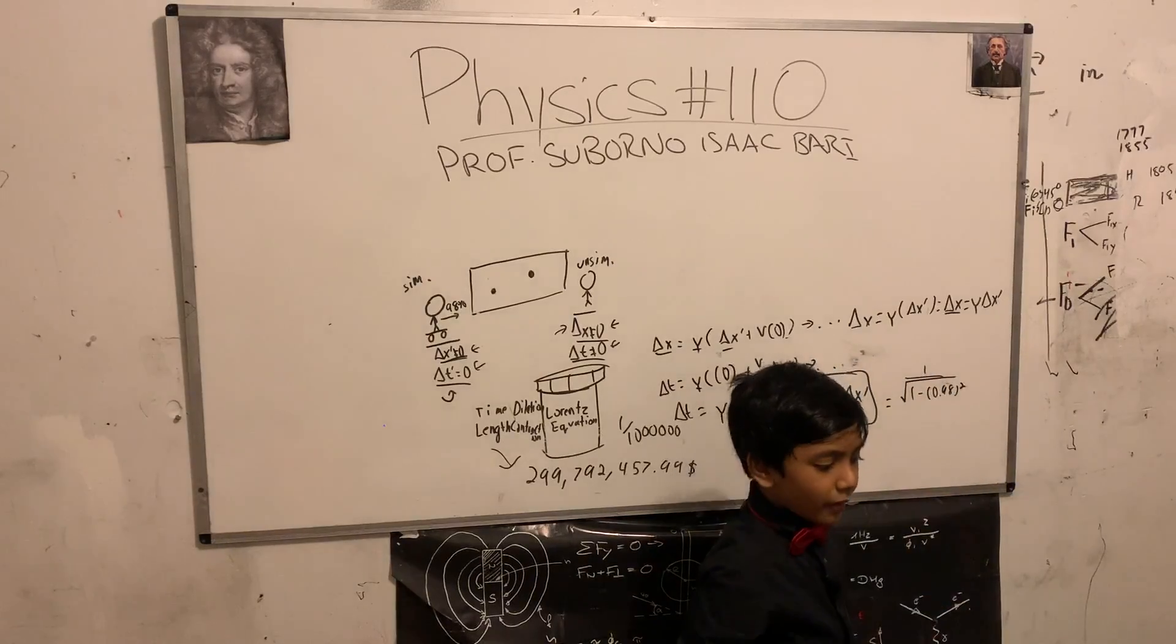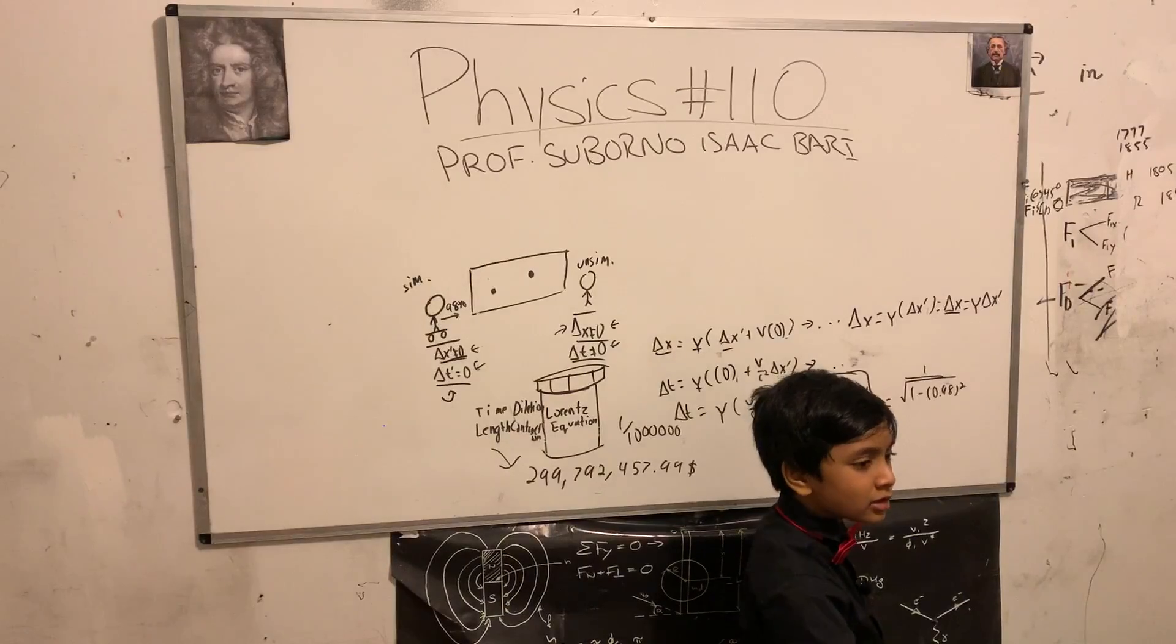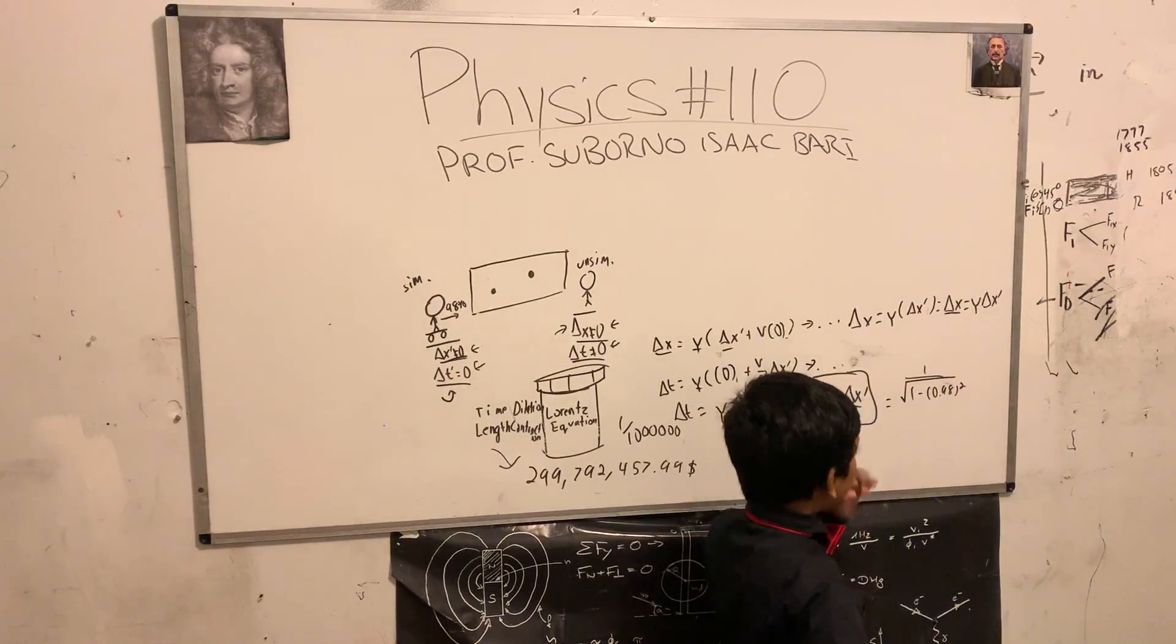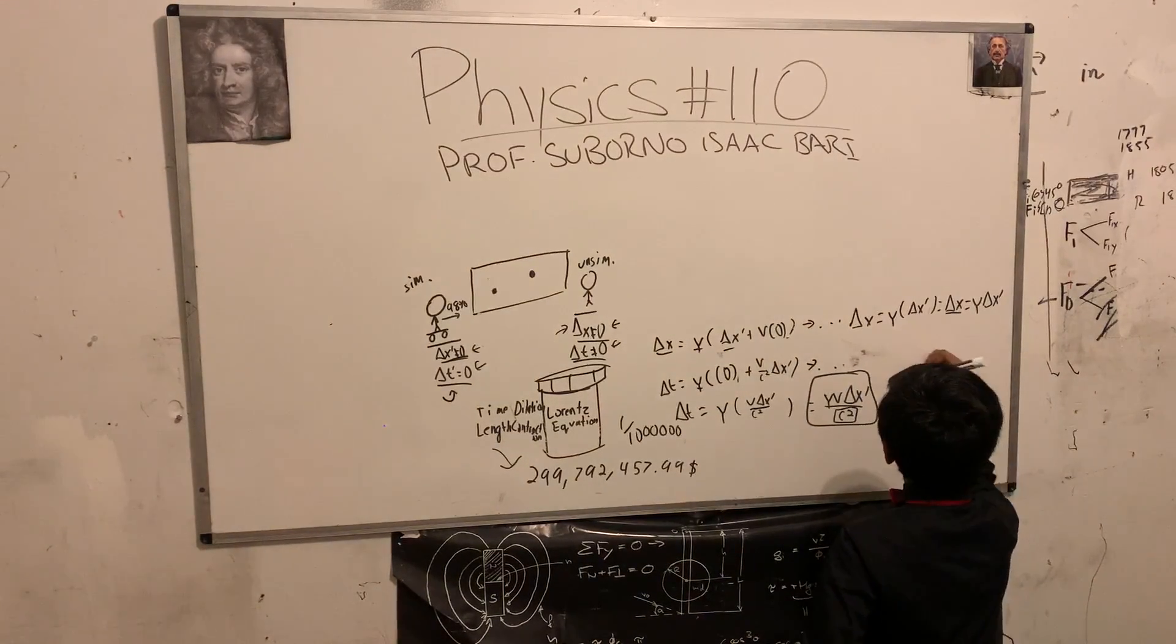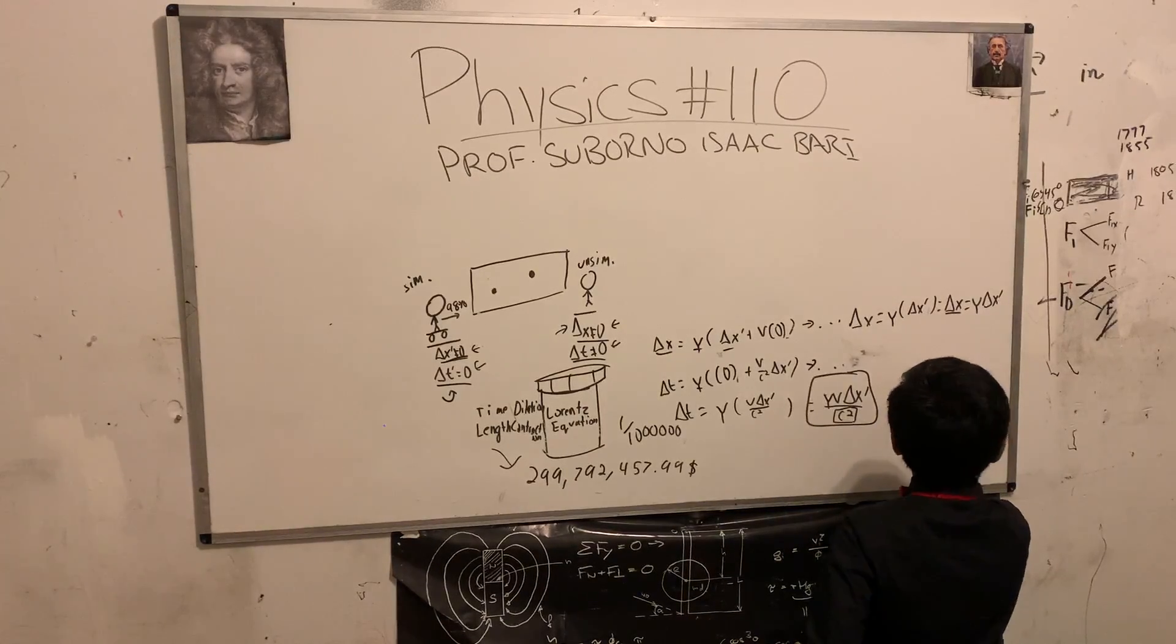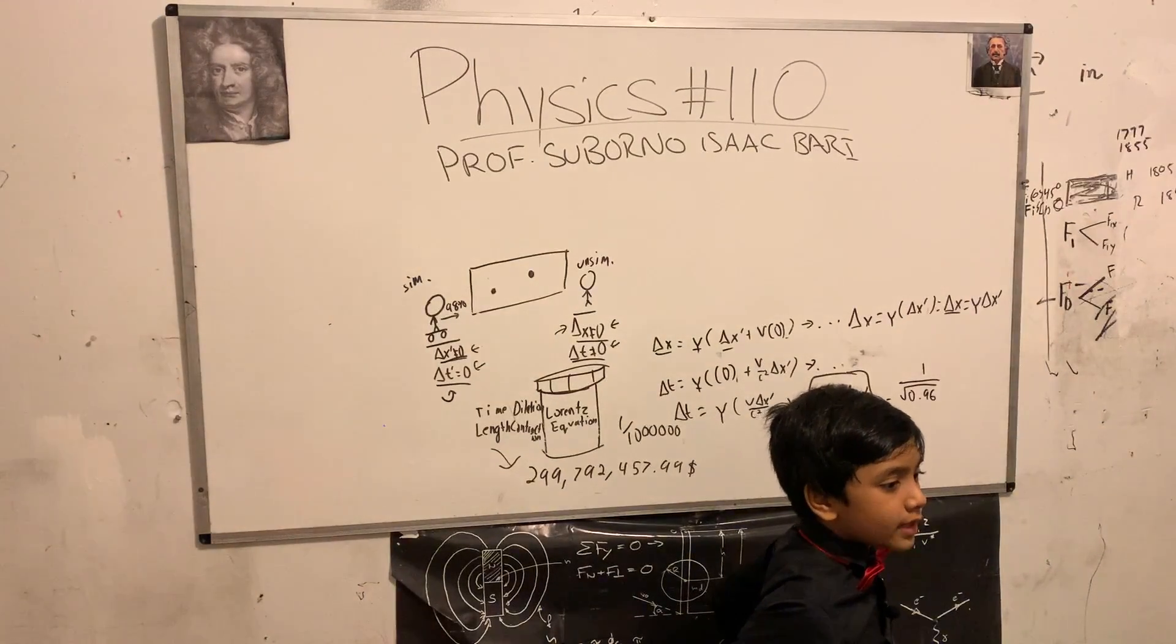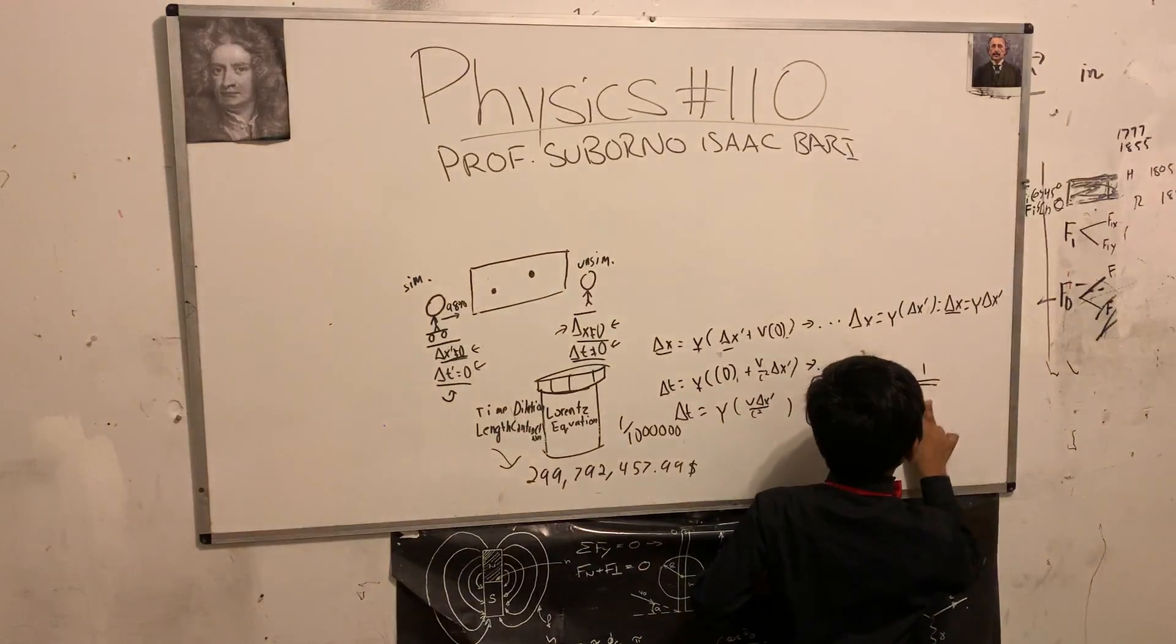So now, excuse me Albert, what's 0.98 squared? Is 0.96. So now that simplifies to 1 over root of 0.96.